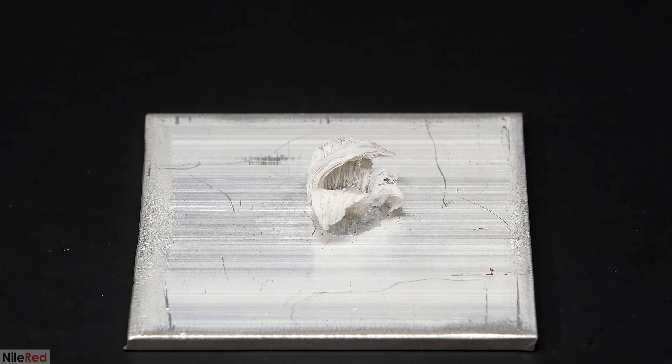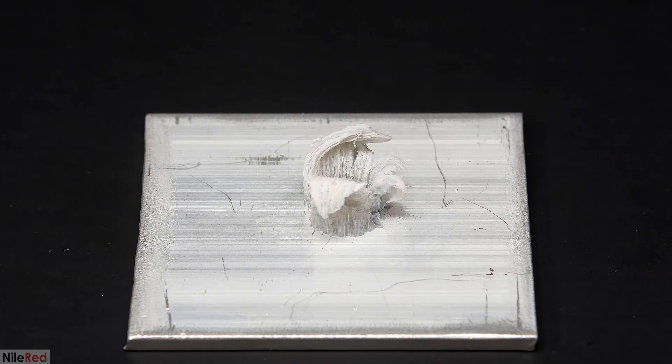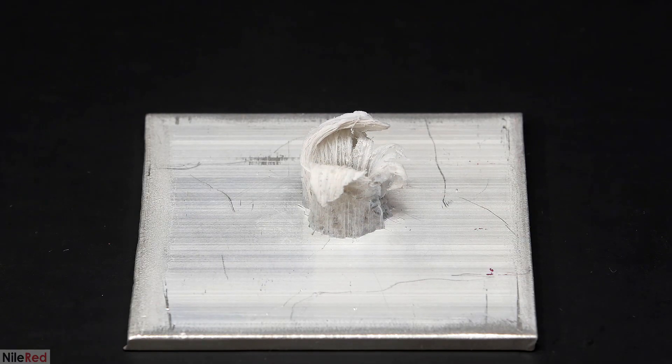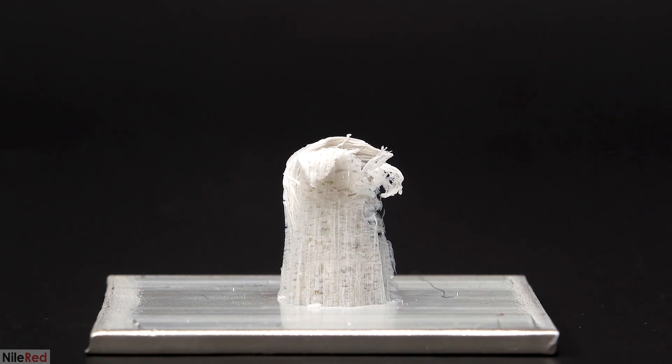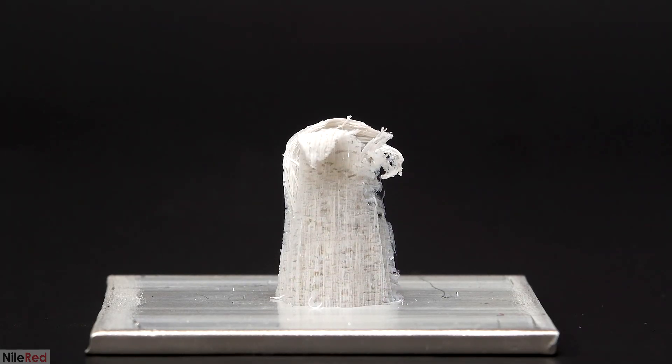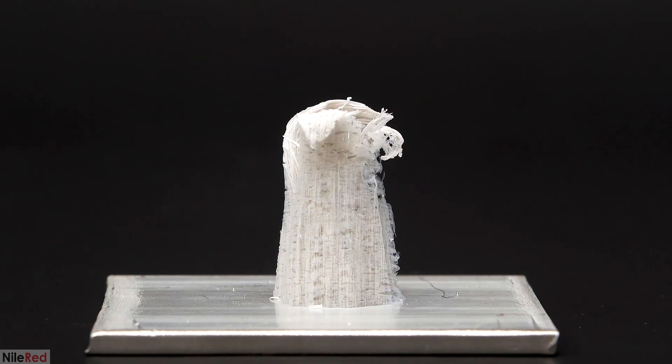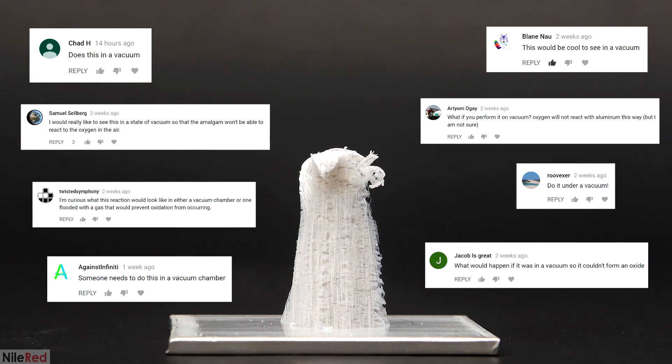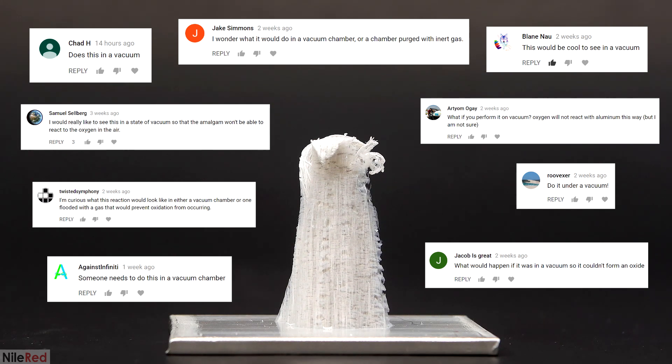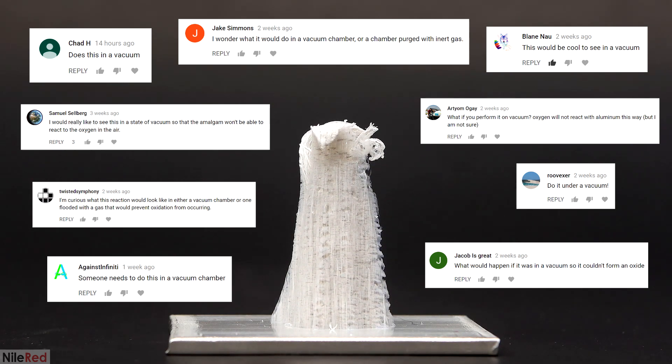Anyway, in the comments of the original video, a lot of you told me that I pronounced aluminum wrong, but there were some of you who had good suggestions. The tower that's growing is made of aluminum oxide which forms as the mercury exposes fresh aluminum to the air. So a bunch of you asked what would happen if the air is removed and there's no oxygen to react with the aluminum?